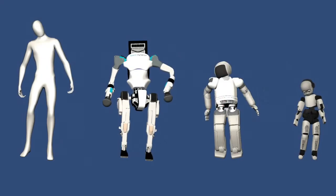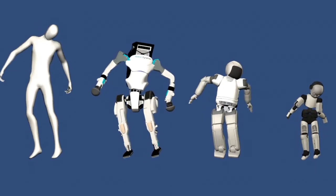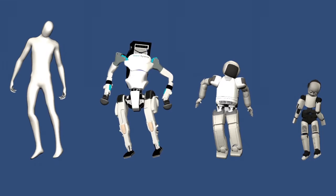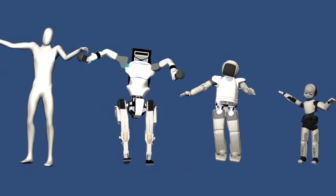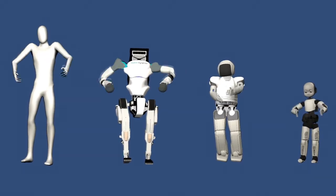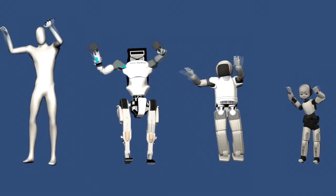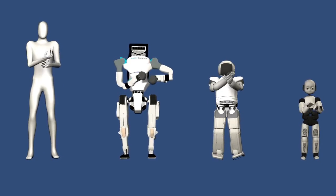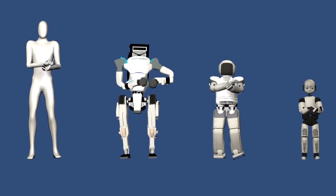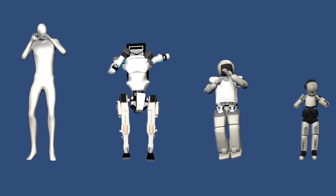This is the result of our proposed method applying on different robot models. Five different poses are demonstrated on three robots. To make it easier to understand, we prepare a 3D model on the left side showing the original mocap animation.